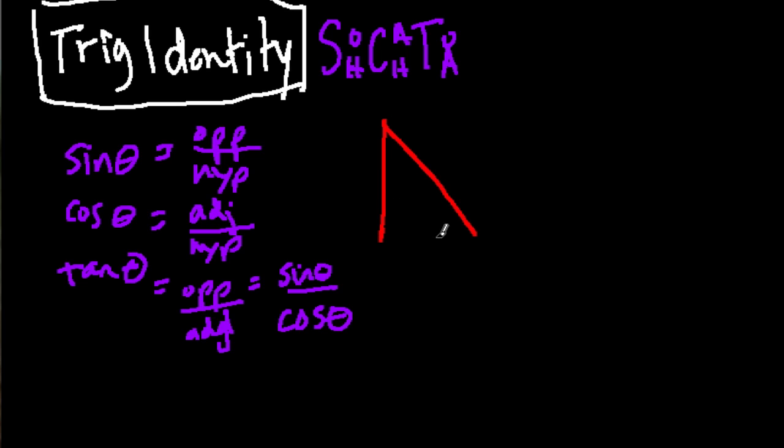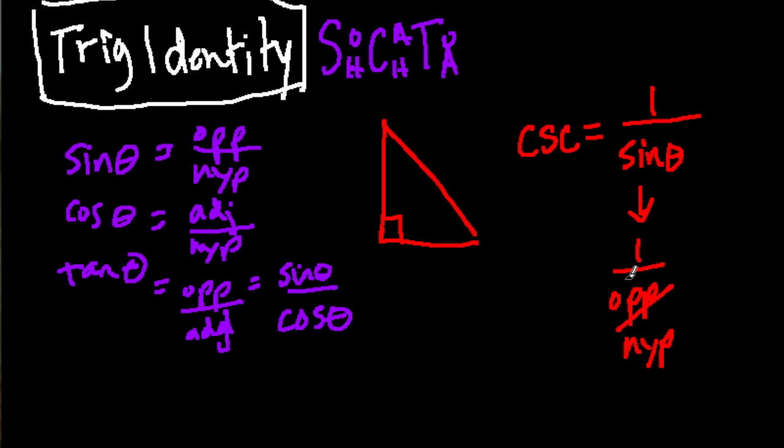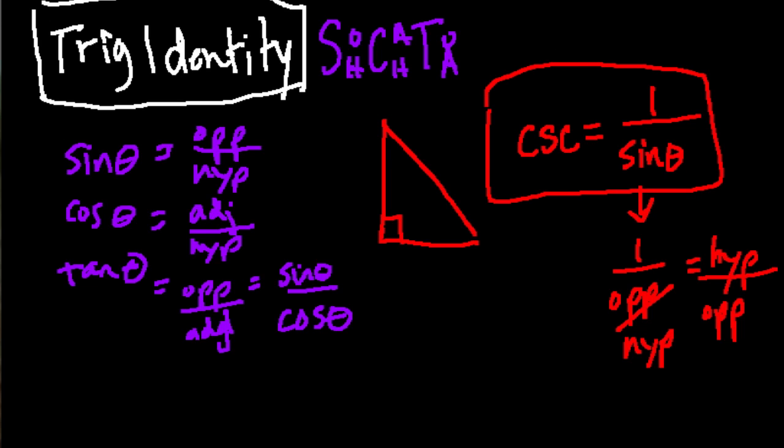So what if we had a right triangle and we wanted to find out the hypotenuse over the opposite? What would that be? Well, the hypotenuse over the opposite would have to be what's called the cosecant. So the cosecant is, you can think of it as 1 over the sine of theta, which is really 1 over the opposite over the hypotenuse. 1 divided by the opposite over the hypotenuse is 1 times the hypotenuse over the opposite, which equals hypotenuse over opposite.